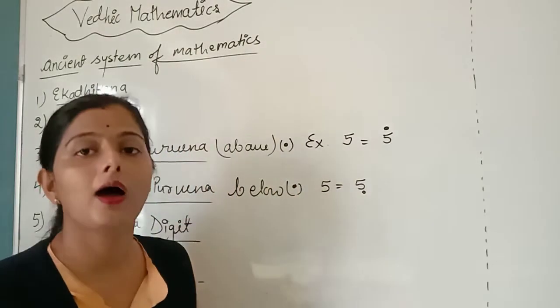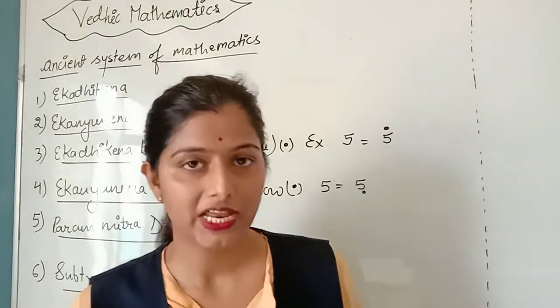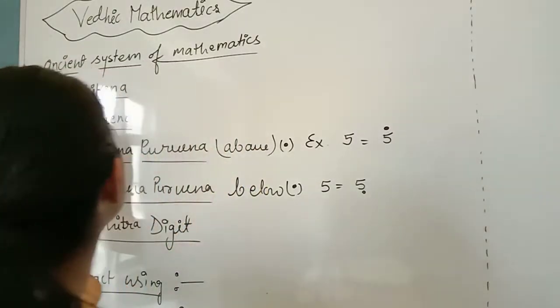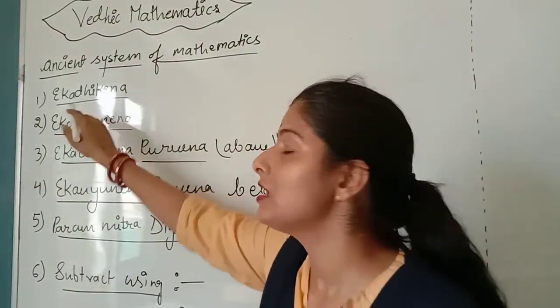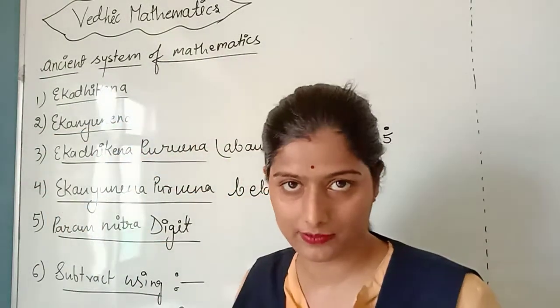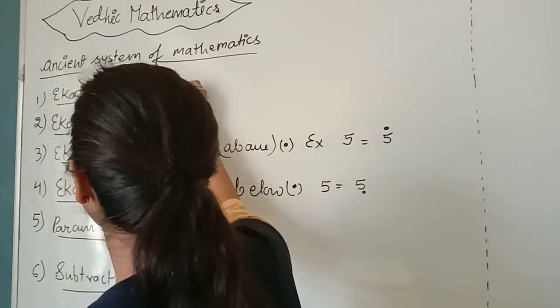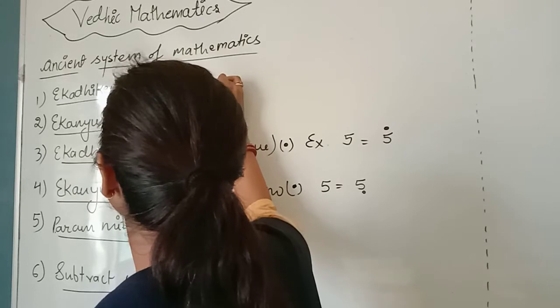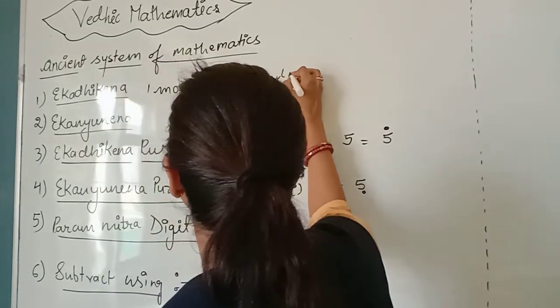In the past few years we have used this simple way. Now we will learn some formulas which we call Sutras. First, we have Ek Adhiken. Ek Adhiken means one more in a particular number.